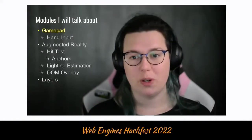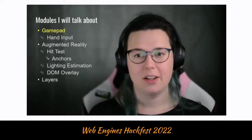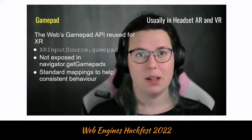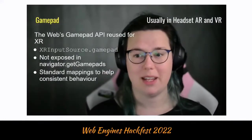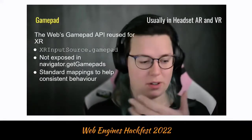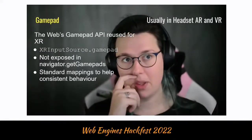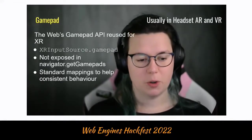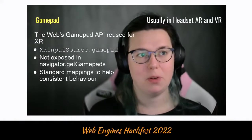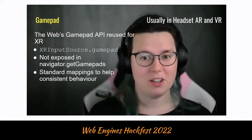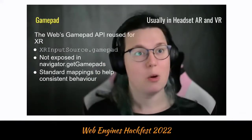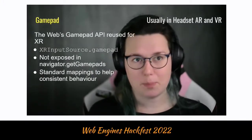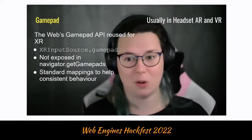The first module is the XR GamePad API, designed to help developers build experiences that closely match the user's real hardware. It's usually available for headset-based augmented or virtual reality — not typically for phones, since phones don't have external controllers. Through WebXR, there's an XR input source object that tells you the position and rotation of different parts of the controller. There's also a GamePad object on it, which exposes the various buttons and joysticks as buttons and axes objects through the GamePad API.